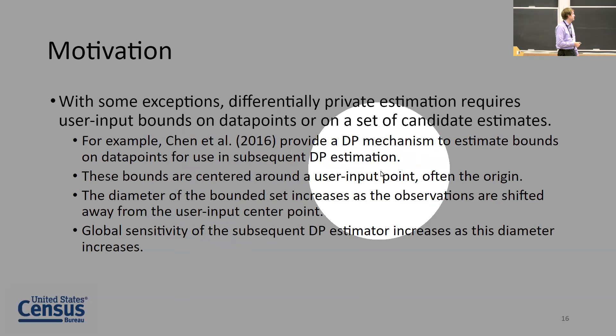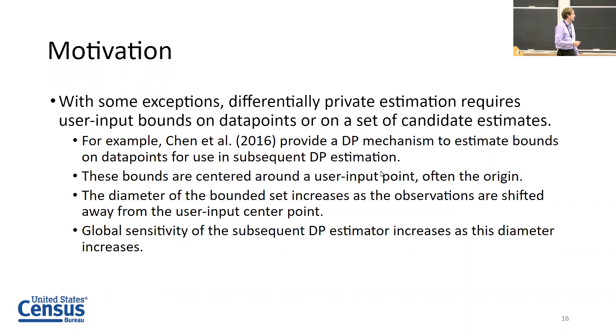But the error can be significant when the bounds are not ideally centered - when you don't have a good estimate of the location of the data to center these bounds around. As the diameter of these bounds increases, the global sensitivity increases. You ideally want very tight bounds around your data points, and that can be difficult.